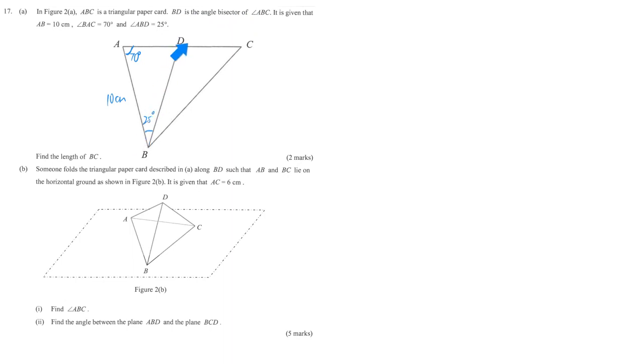They say that BD is the angle bisector. Bisector means separate to equal parts, cut that angle evenly. So therefore, this is 25, which means that another right hand side is also 25 degrees.